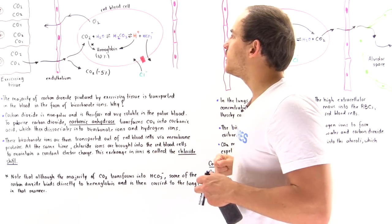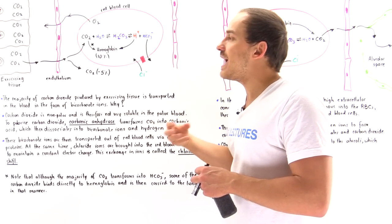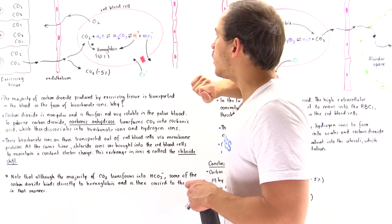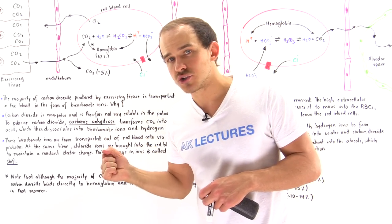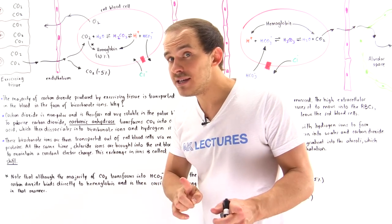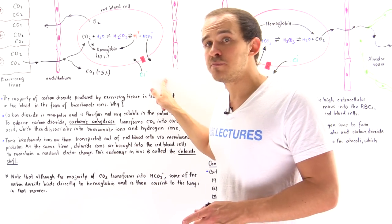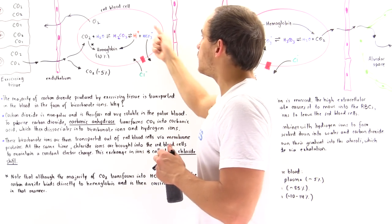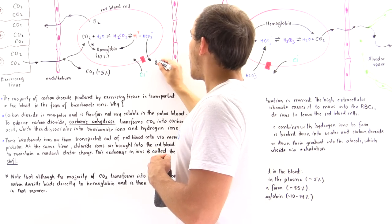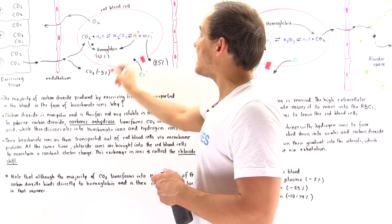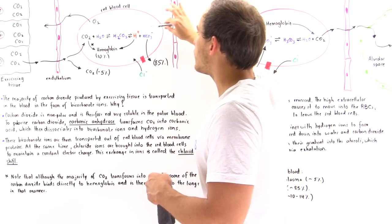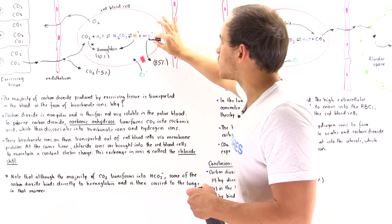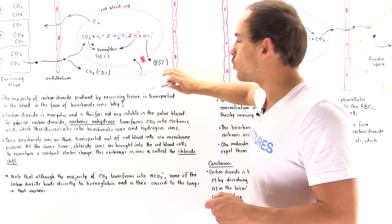Bicarbonate ions are simply another form of carbon dioxide, but with a key difference: bicarbonate carries a full negative charge, making it a polar molecule. This means it can dissolve readily in the polar blood plasma. About 85% of the initial carbon dioxide that entered the blood plasma ultimately exists in the form of bicarbonate ions, which are transported out of the red blood cell into the blood plasma by a special membrane transport protein.